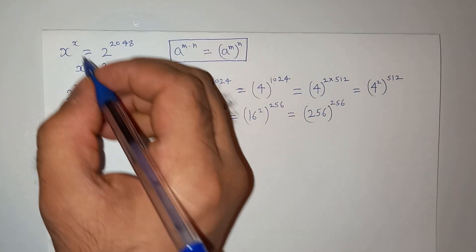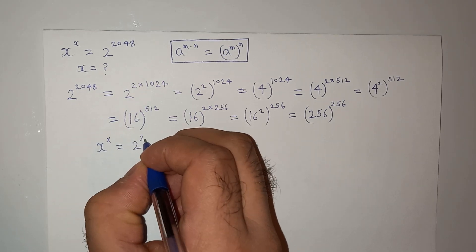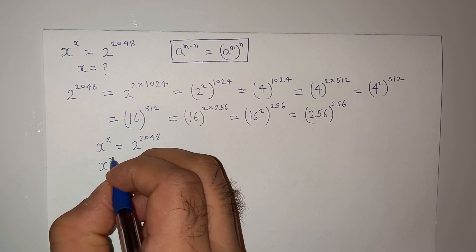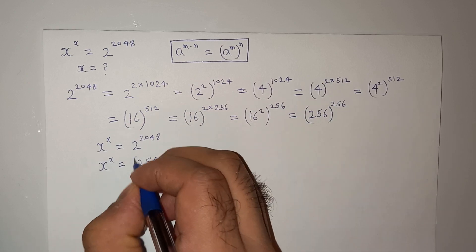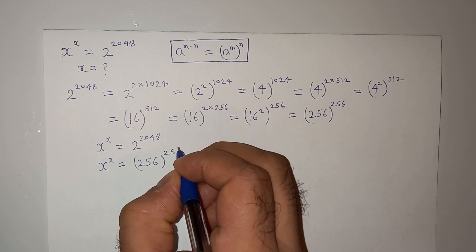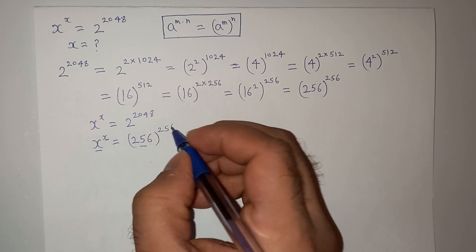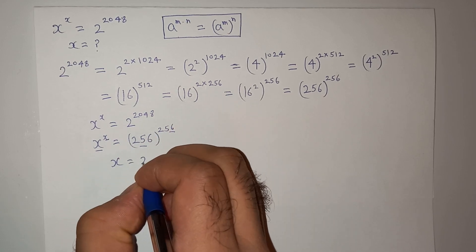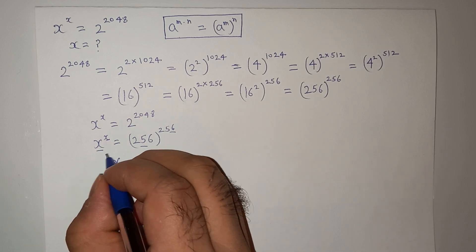Now our original question was x^x = 2^2048, so we can write this as x^x = 256^256. Now you can clearly see that the base is the same and the exponent is also the same, so the value of x will be 256. This is the answer.